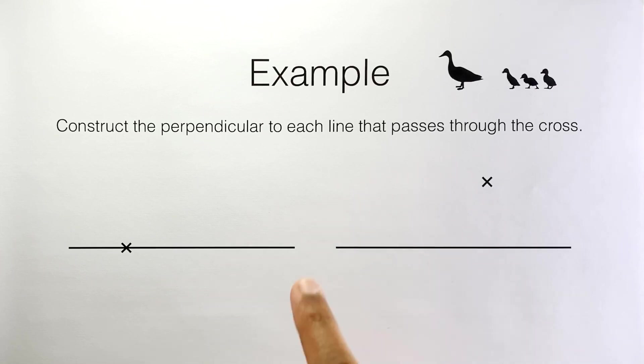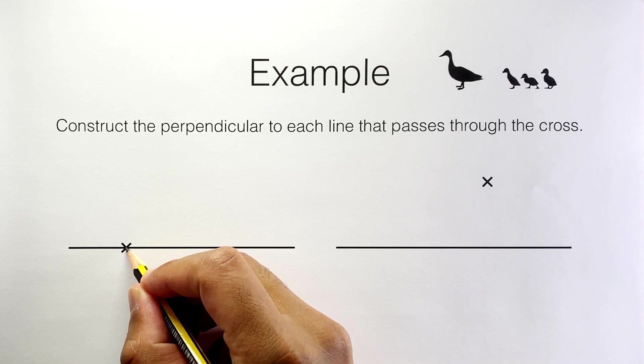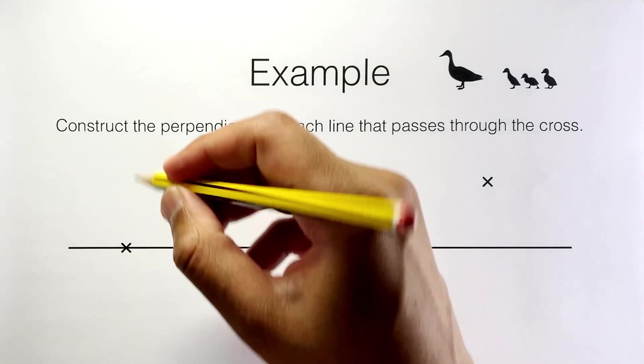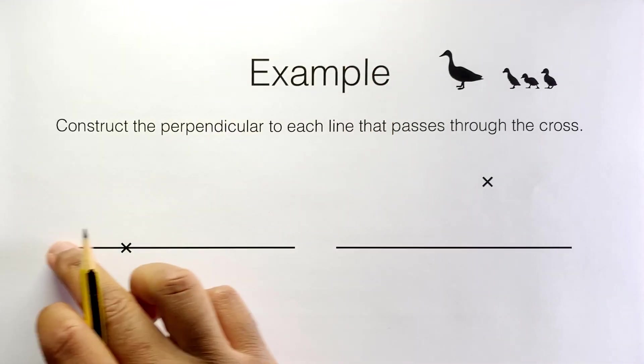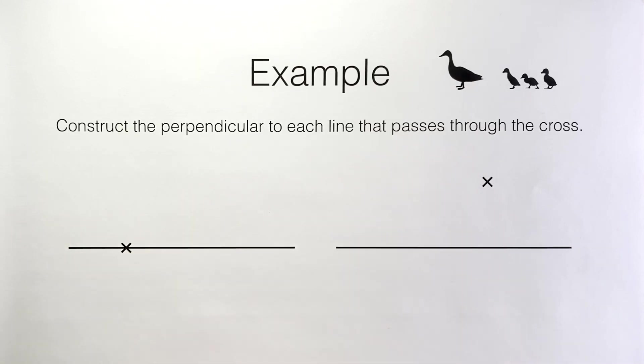Now in the first example here we want to construct a perpendicular to this line segment at this point. So we want a line that's at right angles to this one that goes through this point. Notice that this point marked here is not the midpoint of this line segment.